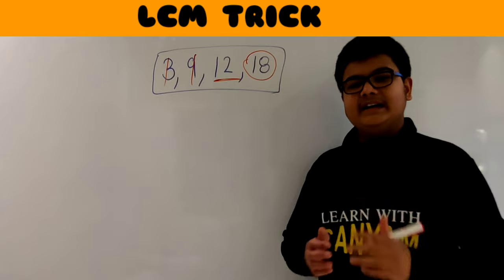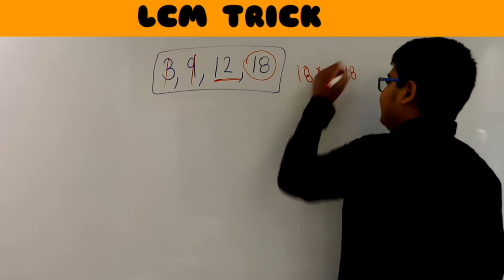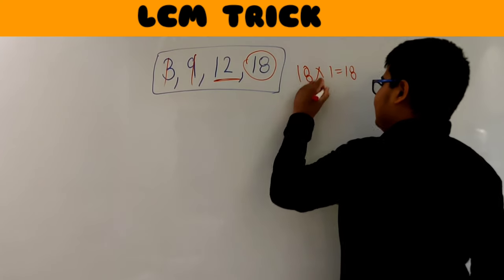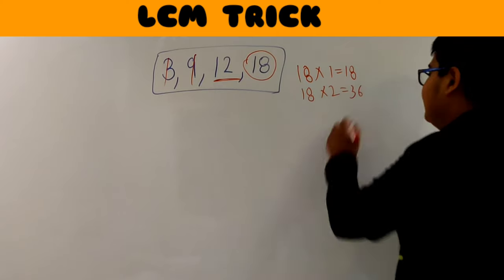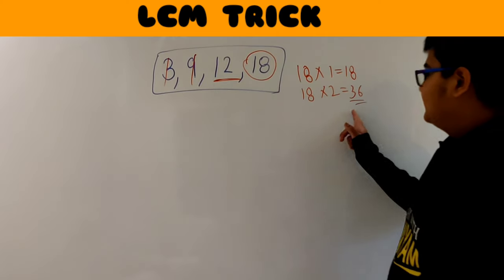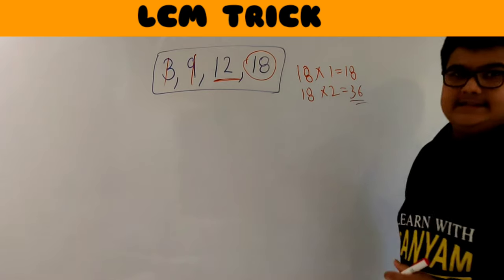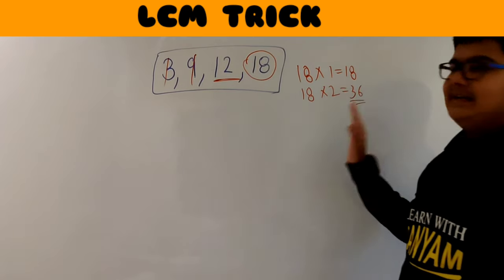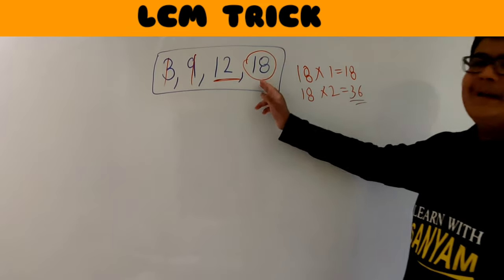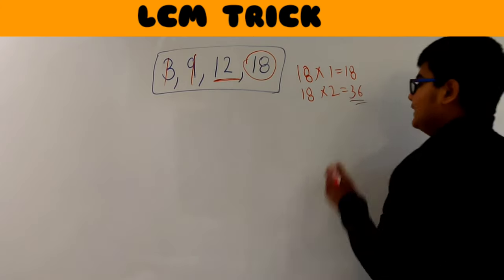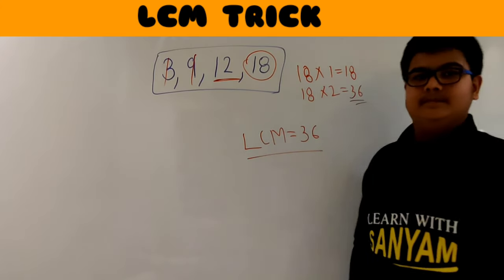Now we take multiples of 18. 18 × 1 = 18; the next multiple is 18 × 2 = 36. We keep taking multiples and checking. Is 36 divisible by 12? Yes — 12 × 3 = 36. So 12 is now completely divisible by 36. And since 3 and 9 were already divisible by 18, they will be divisible by 36 as well. So our LCM is 36.